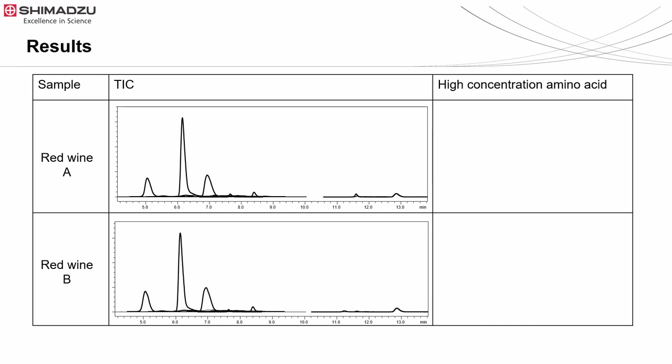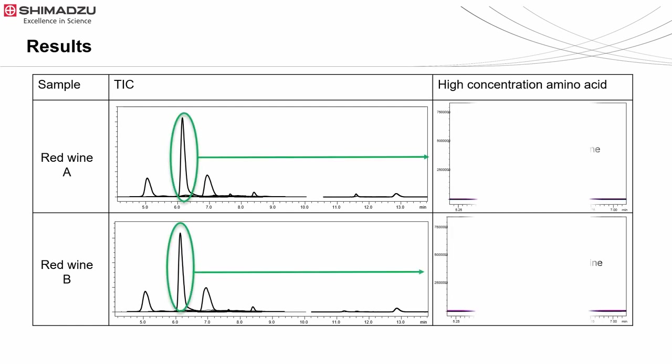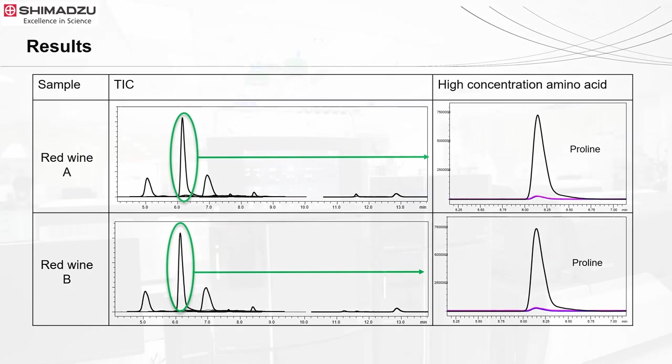Lastly, chromatograms of both red wine A and B are similar to each other. Red wines are detected with many different types of amino acids, and proline was found to be the most abundant among them.